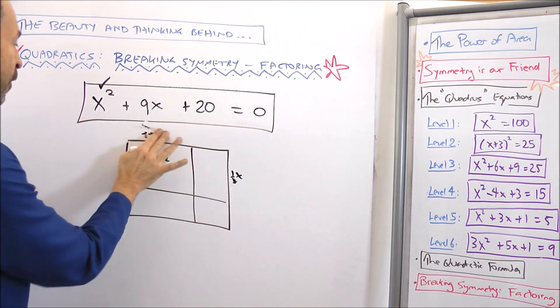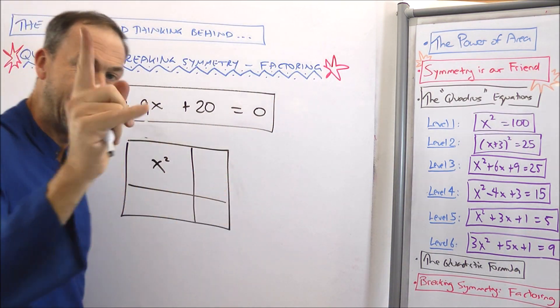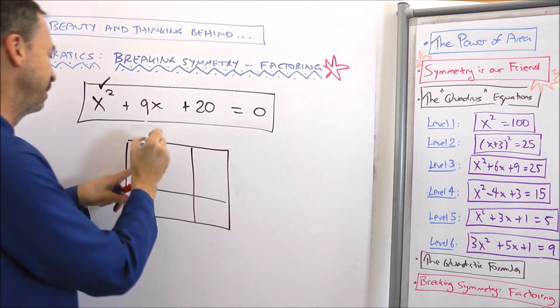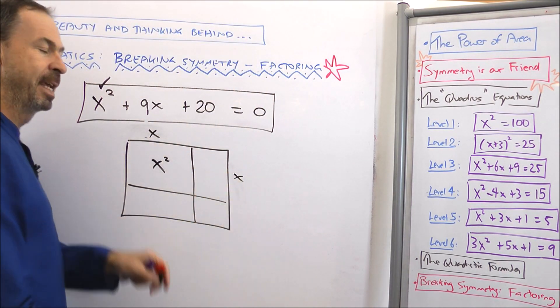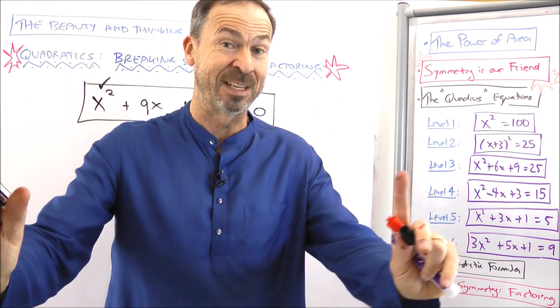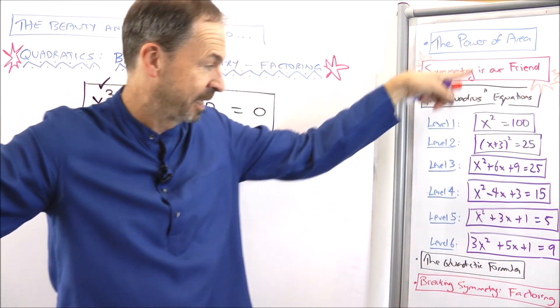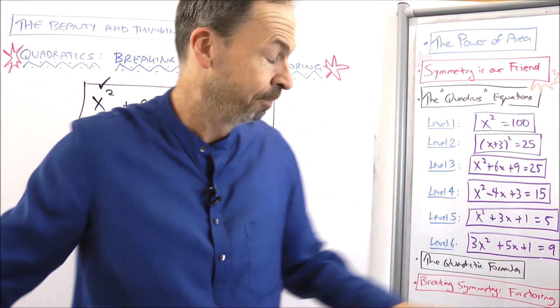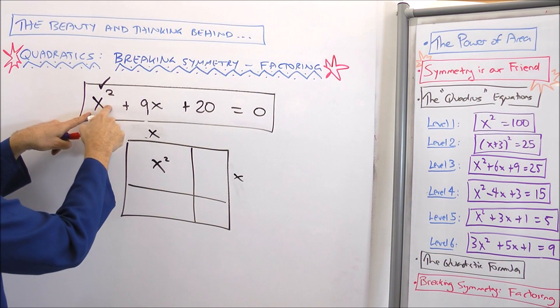But as a first guess, it seems logical to stick with the simplest thing x times x for now. We'll try that. If it doesn't work out, we'll either stop and go back to our standard methods or try something else. Okay, area x squared.